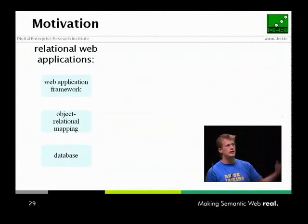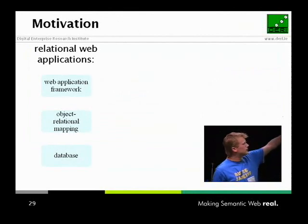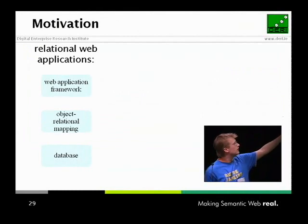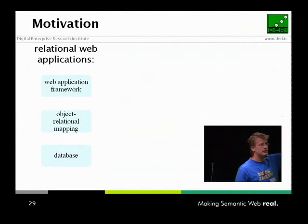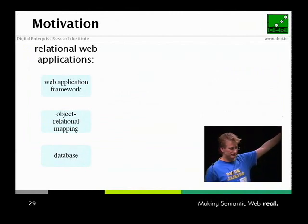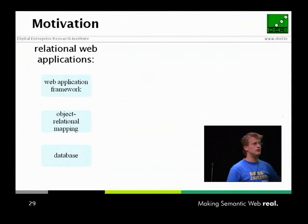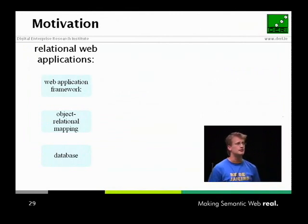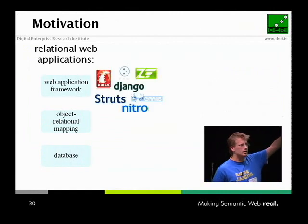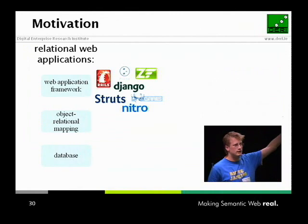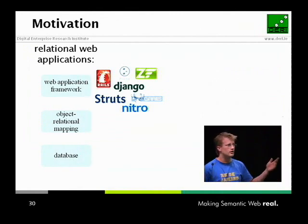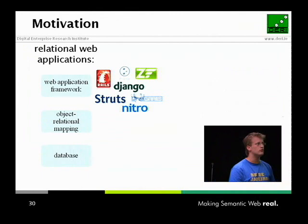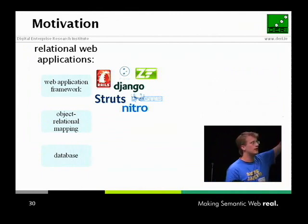The motivation: if you look at traditional database-driven web applications, you typically have a database, on top of which you have object-relational mappings that translate tuples into OO instances. On top of those, you have web application frameworks that handle the more mundane tasks — caching, authorization, routing. We have frameworks like Rails, Django, Struts, and Nitro that help you do this. The important thing is to translate relational data into an OO setting so these applications can work.